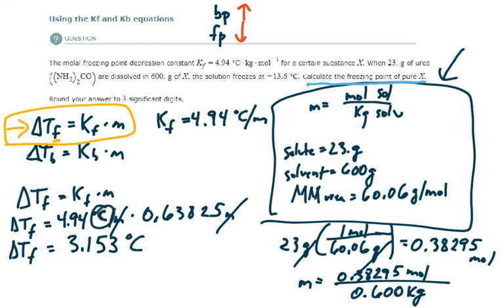So that means, for this solution, with this molality and that solvent, substance X, this is how much the freezing point is depressed. They tell me that the solution freezes at negative 13.6 degrees Celsius, and I know that that is the depressed temperature, because it's frozen, because it's frozen, and it's the solution, not the pure substance.